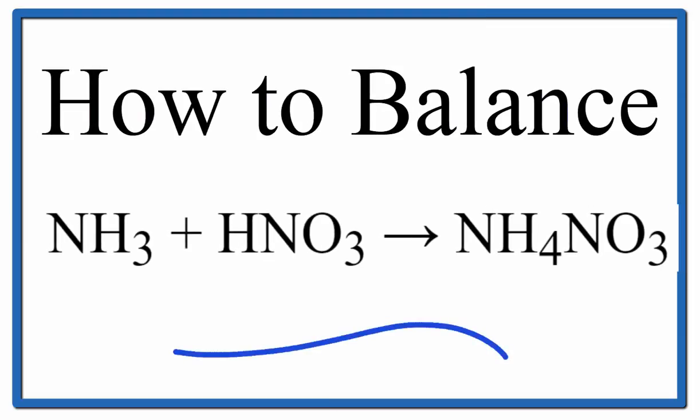To balance this equation, ammonia plus nitric acid yields ammonium nitrate, let's count the atoms up on each side of the equation.